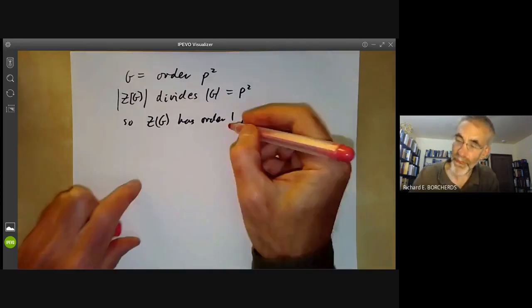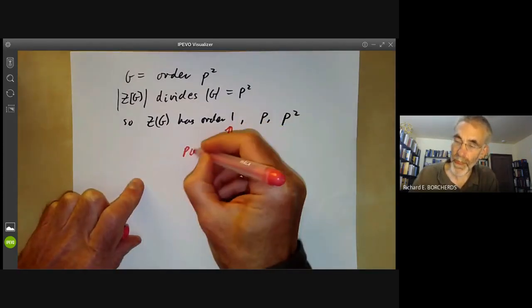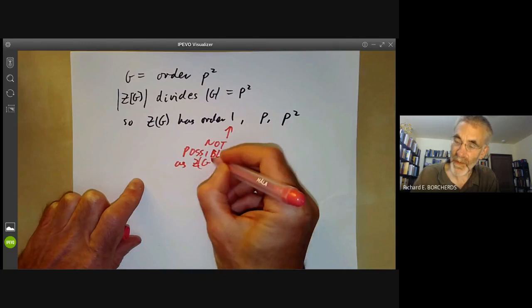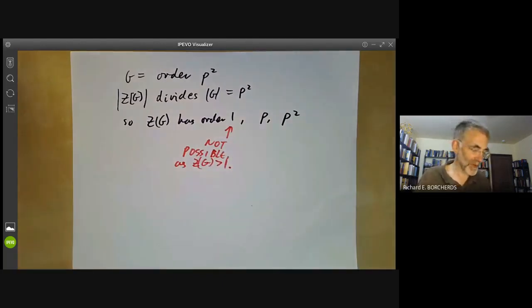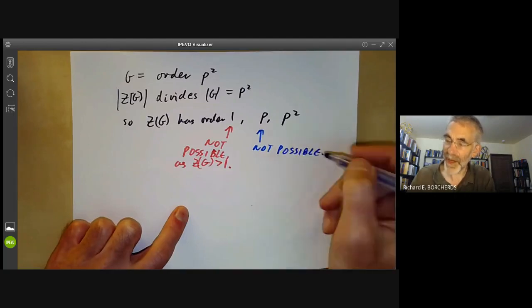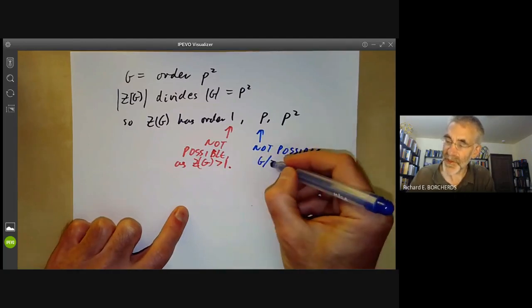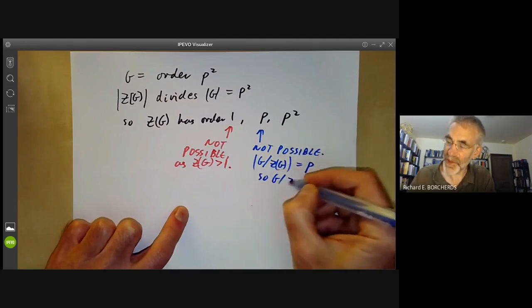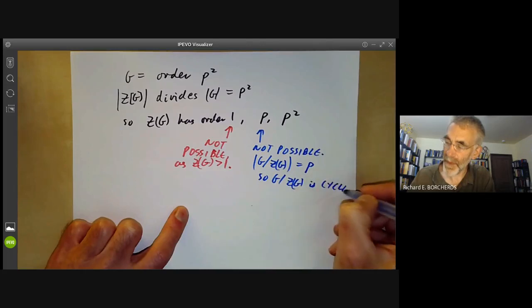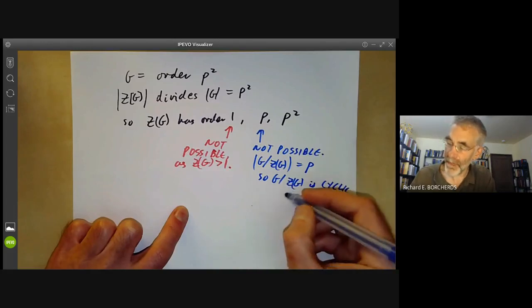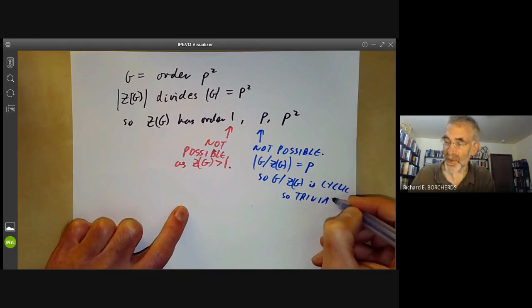And this is not possible by our first theorem, because it would imply that G modulo Z of G has order P, so G over Z of G is cyclic. And if it is cyclic, it would have to be trivial. So this would be trivial, but it is order P, which is impossible.